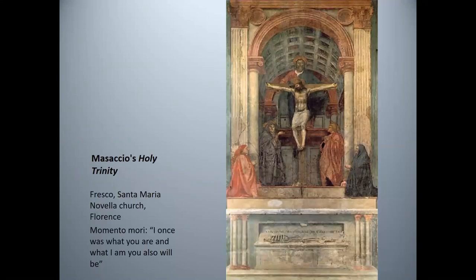Masaccio painted the fresco Holy Trinity for the Santa Maria Novella Church in Florence in 1427. He uses perspective to give the figures depth. The subject here is the Trinity — the Father, Son, and Holy Spirit. See if you can find the symbol of the Holy Spirit; it's the white dove just over the head of Jesus. In the foreground, notice the image of the skeleton and the inscription: 'I once was what you are and what I am you also will be.' This is a memento mori, or a remembrance of death.